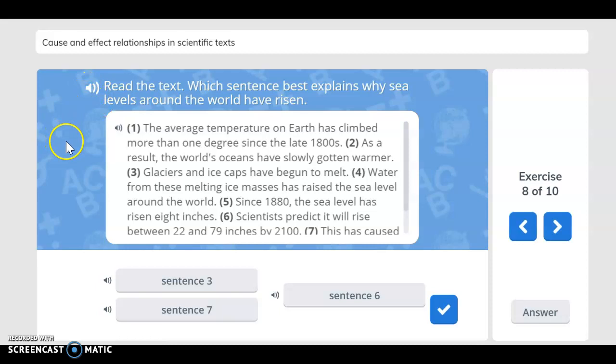Which sentence best explains why sea levels around the world have risen? The average temperature on Earth has climbed more than one degree since the late 1800s. Two, as a result, the world's oceans have slowly gotten warmer. Three, glaciers and ice caps have begun to melt. Four, water from these melting ice masses has raised the sea level around the world.